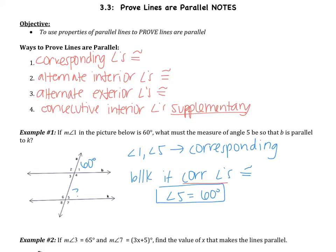That's because the corresponding angles are congruent. This should be very similar to what we did in the last section — we're just changing the meaning a little bit. In the last section, if the lines were parallel, then the corresponding angles were congruent. This time, we're going in the opposite direction: here, 1 and 5 are congruent, and that tells us that B is parallel to K.